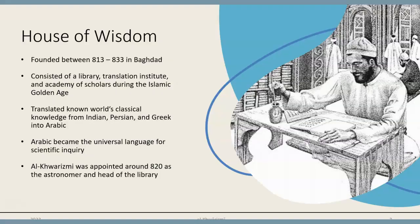Al-Khwarizmi was appointed to the House of Wisdom in 820. The House of Wisdom was a major intellectual center located in Baghdad and consisted of a library, translation institute, and academy of scholars. Classical knowledge was translated there from Indian, Persian, and Greek, and Arabic became the universal language for scientific inquiry.